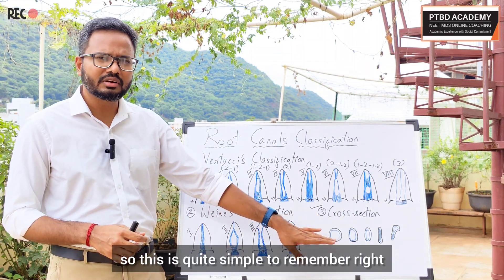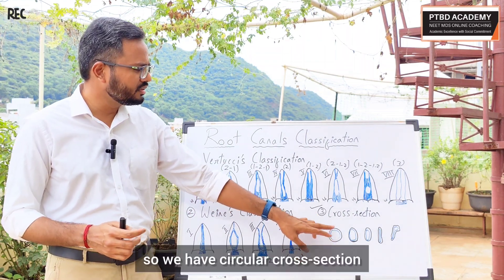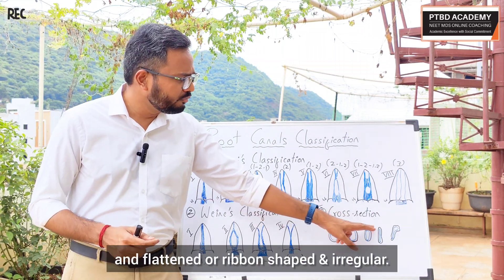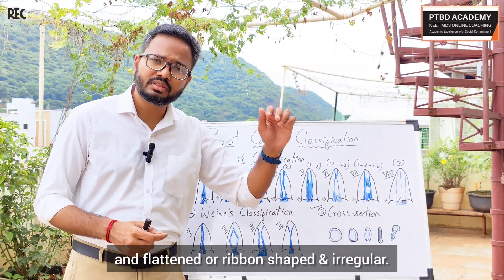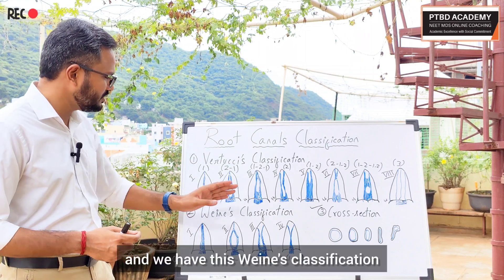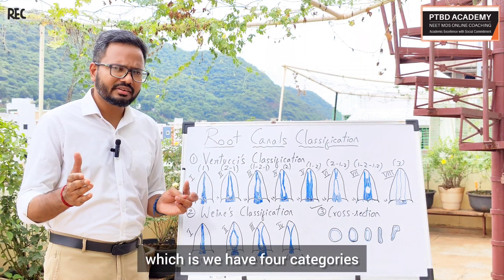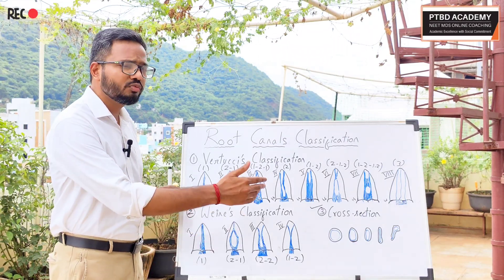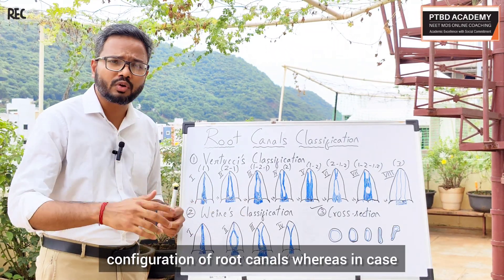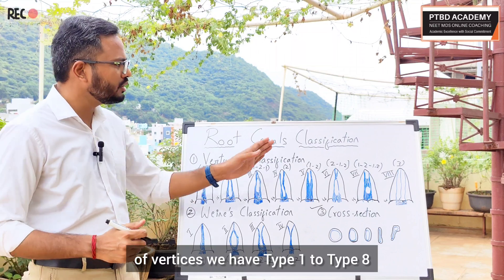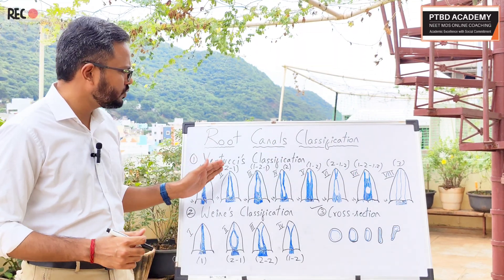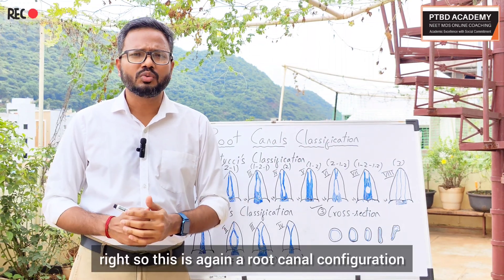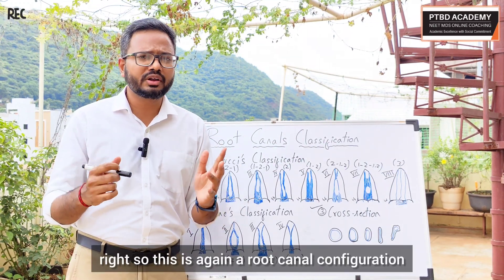The cross-sectional classification is simple: circular, oval, long oval, flattened or ribbon shaped, and irregular. The Weine classification has four types: type 1 (1), type 2 (2-1), type 3 (2-2), and type 4 (1-2). The Vertucci classification has eight types: type 1 (1), type 2 (2-1), type 3 (1-2-1), type 4 (2), type 5 (1-2), type 6 (2-1-2), type 7 (1-2-1-2), and type 8 (3).